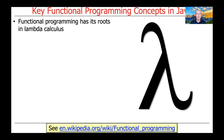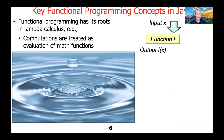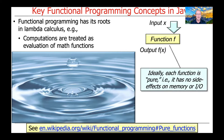Functional programming has its roots in a formalism known as lambda calculus. In lambda calculus, computations are treated as the evaluation of mathematical functions, where you take the input to a function, it does some computation, and it produces an output. Ideally, each function is so-called pure, which means it has no side effects on memory or I/O, but instead only works on the input parameters passed to it and then produces output either through a return value or through the parameter list.